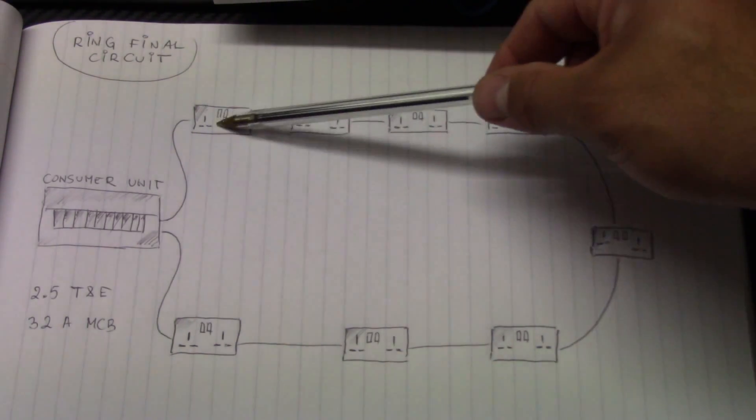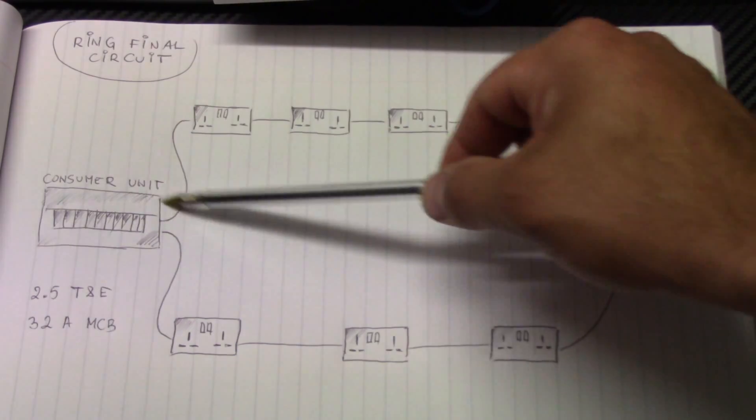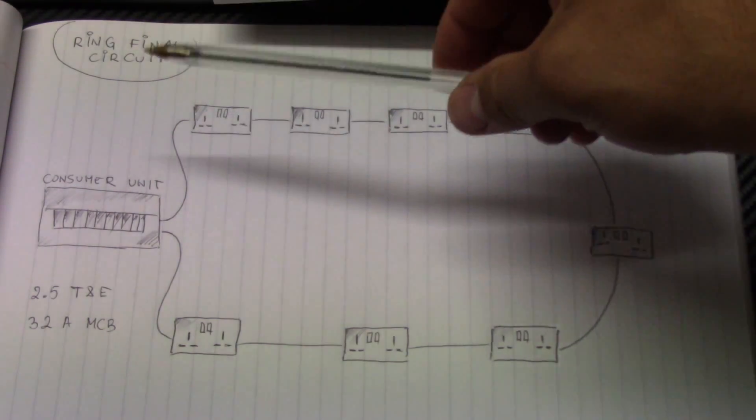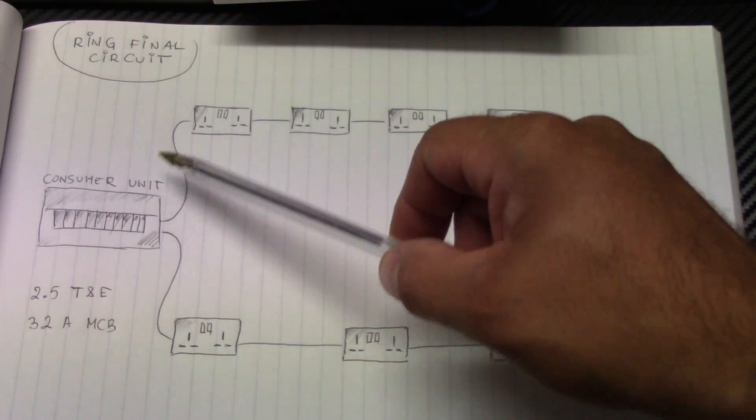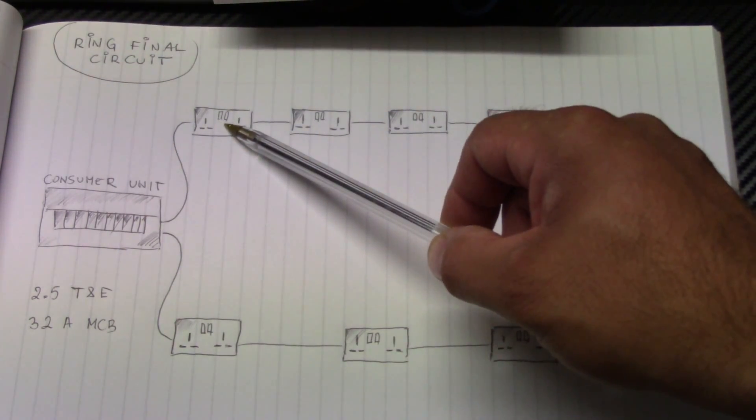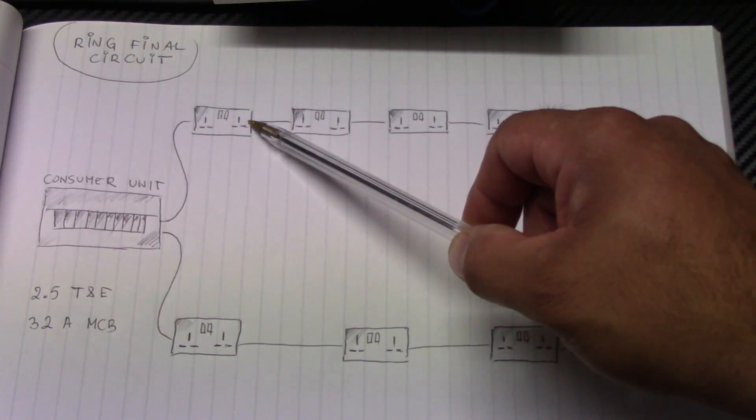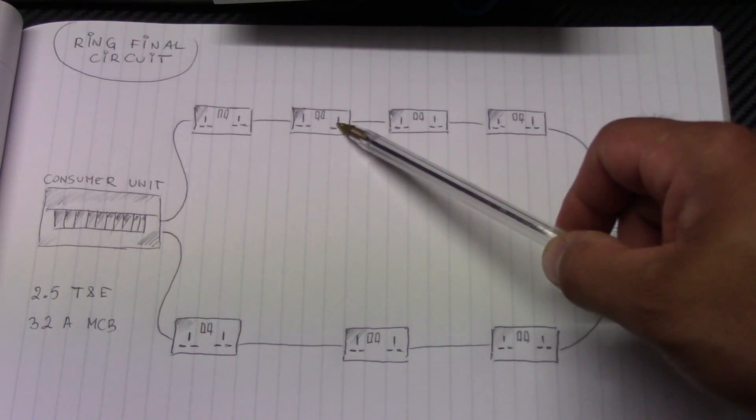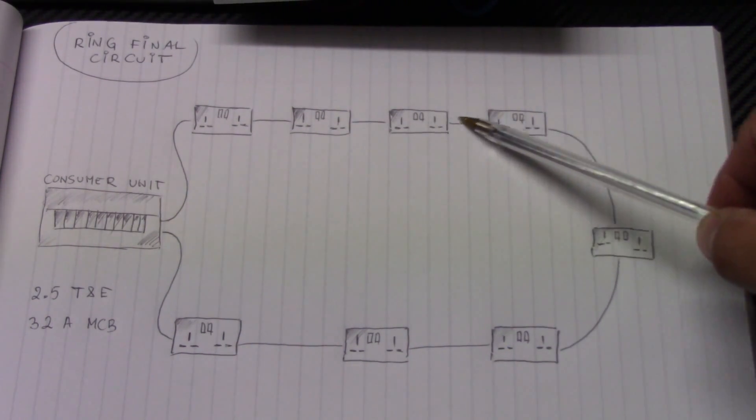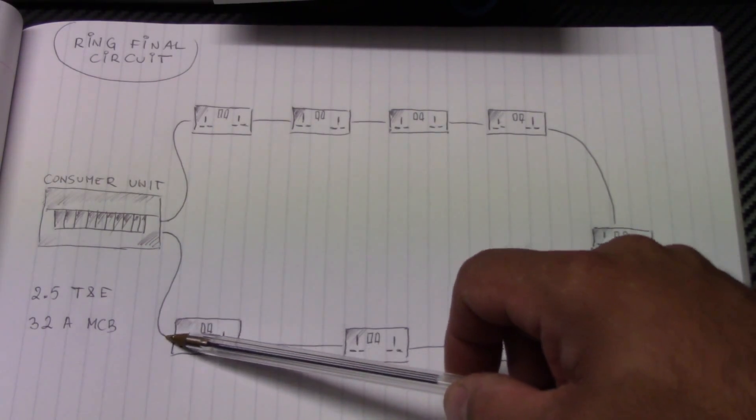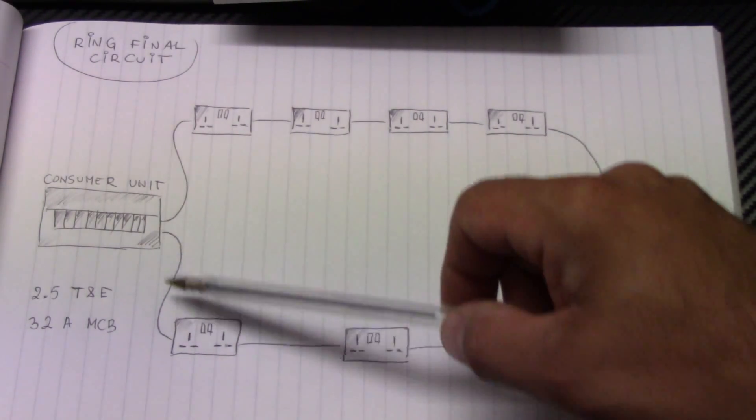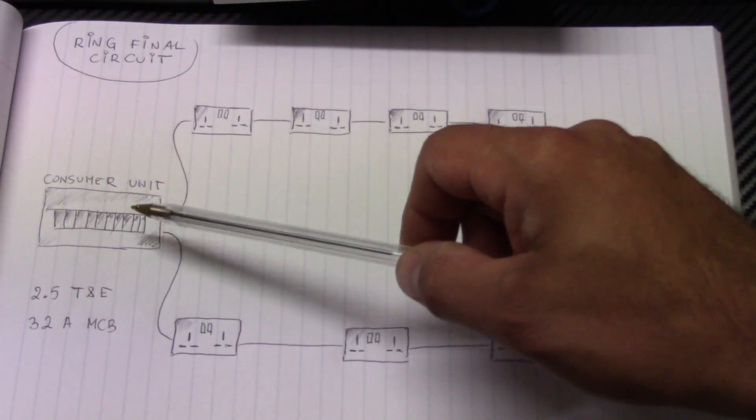As you see, here are sockets, here is the consumer unit. The ring final circuit starts at the consumer unit, then the cable fits first socket, then split here to another socket, split here to another socket, and so on up to the last socket. From the last socket, it's also connected with the same cable to the consumer unit.